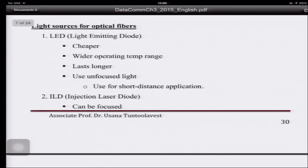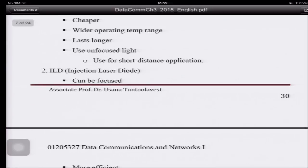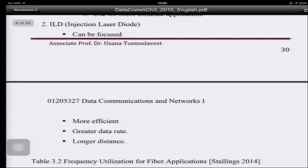For light sources in optical fiber, there are two types: the light emitting diode (LED), which is cheap, works over a wide operating temperature range, and lasts long — but uses unfocused light and is suitable only for short-distance applications. The injection laser diode (ILD) produces a focused beam, is more efficient, supports longer distances, and achieves greater data rates.